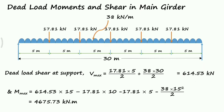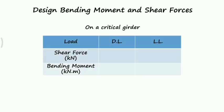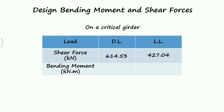We have now obtained the maximum shear force and maximum bending moment due to dead load. The design bending moment and shear forces on the critical girder due to dead load and live load are: Dead Load Shear Force (DLSF) = 614.53 kN, Live Load Shear Force (LLSF) = 427.04 kN, Dead Load Bending Moment (DLBM) = 4675.73 kN·m, and Live Load Bending Moment (LLBM) = 2073.8 kN·m. Thank you.